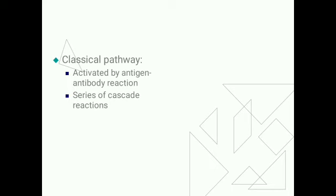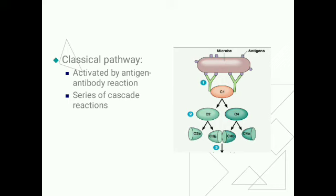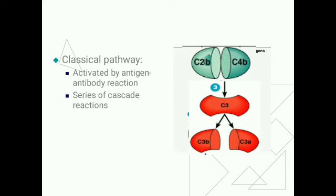The classical pathway is activated by antigen-antibody reaction. When an antibody binds with the antigen, it activates C1, a complement protein. Activated C1 then activates C4 and C2. Activated C4 and C2 activate C3. In the classical pathway there is a series of cascade reactions.